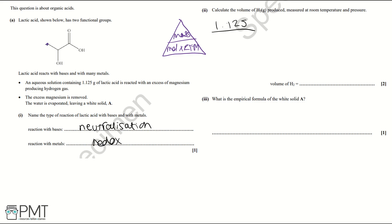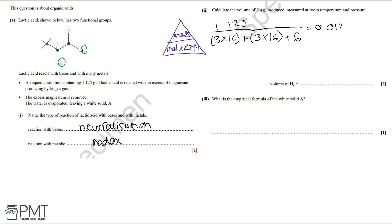To find the relative formula mass: lactic acid has three carbons, so 3 × 12; three oxygens, so 3 × 16; and six hydrogens — three on the far left carbon, one on the second carbon, one in the OH group, and one in the carboxylic acid OH group. This gives a relative formula mass of 90, and therefore 0.0125 moles of lactic acid.